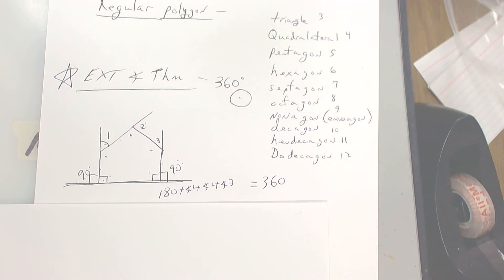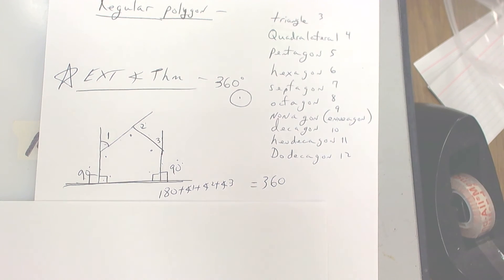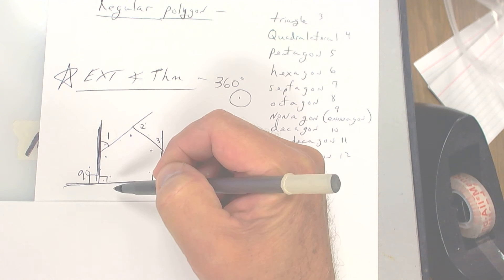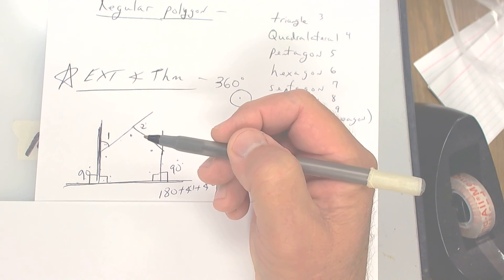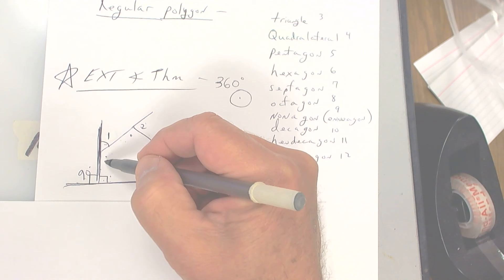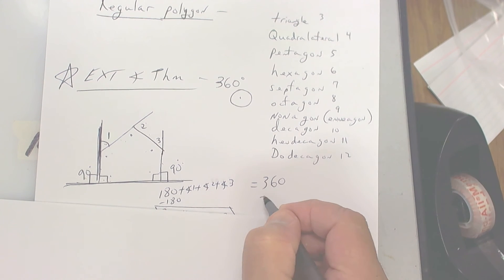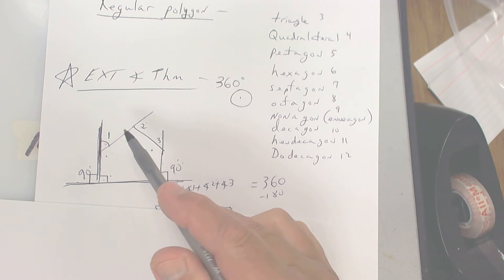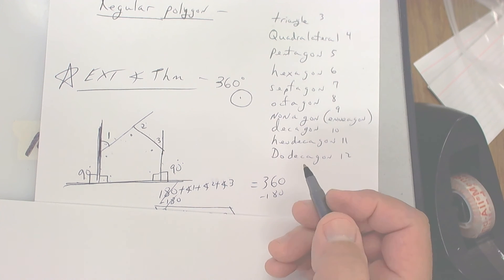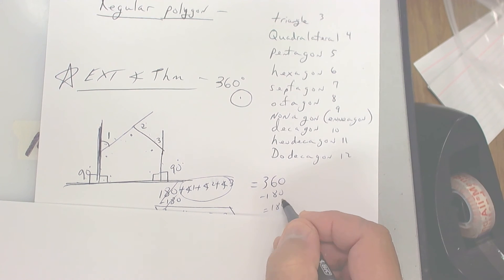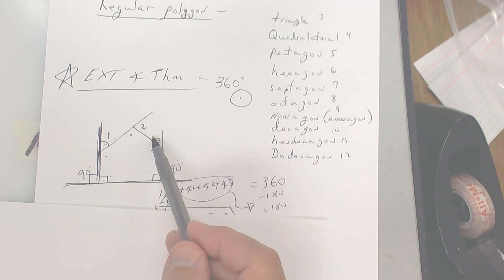Now the question is how are we going to get the individual angles. This line is 180, so if one angle is 90, we're kind of limited in what we can figure out. Really all you can do is subtract — you can say that angle 1 plus angle 2 plus angle 3 add up to 180. That's really all you can do, because we don't know if these are equal. If they are equal, then we can finish it out.